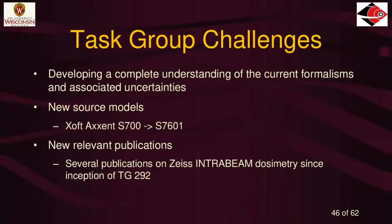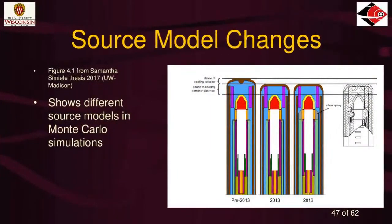The challenges facing our task group include developing a complete understanding of the formalisms from the manufacturers, dealing with new source models and new publications that have come out in the last five years since we started. For example, three Monte Carlo models of the Zoft Accent source over the last seven years show differences — small tweaks to models that change dosimetry parameters over time. That's a challenge when dosimetry parameters change.